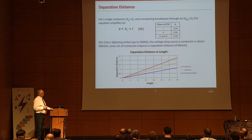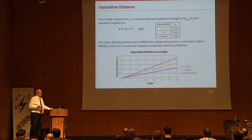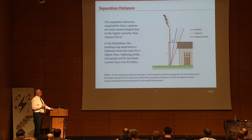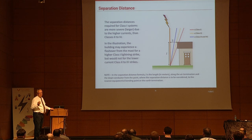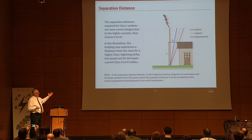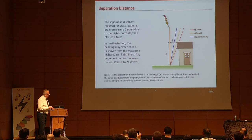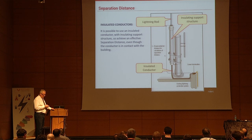Setting Km and Kc to one simplifies the formula. The curve for classes one through three indicates the cable length and separation distance. Class one is the most conservative and would overlap with the roof; class two almost touches the roof; class three and four may pass but you still need to calculate. You're strongly advised to always do the calculation for separation distance.